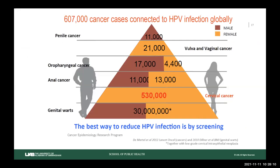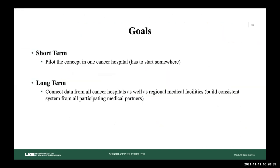Looking at the global burden of HPV-related cancers: genital warts, cervical cancer, anal cancer, and then oropharyngeal cancer — which falls under head and neck cancer — with a large proportion attributed to HPV. At that meeting, we decided on a short-term goal: a pilot study at that cancer hospital, with a long-term goal to connect all other cancer hospitals in Nepal. Keep in mind there are only seven cancer hospitals in the entire country — some large, some small — that can treat cancer patients.